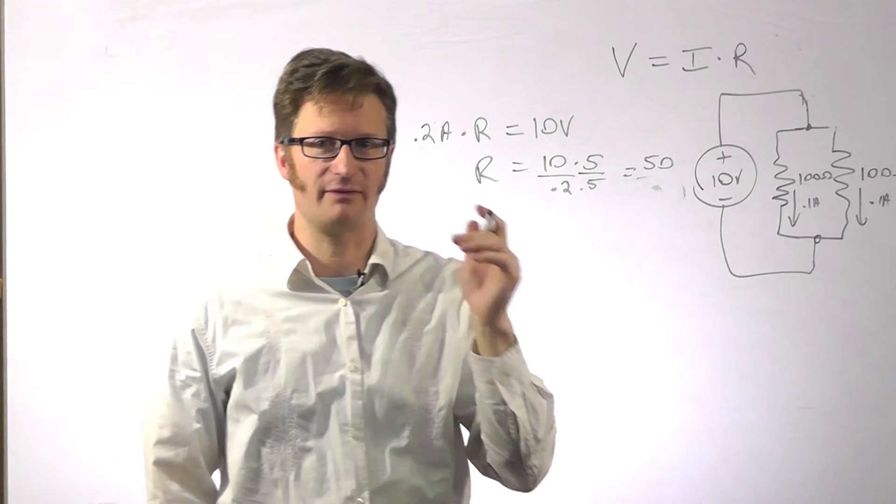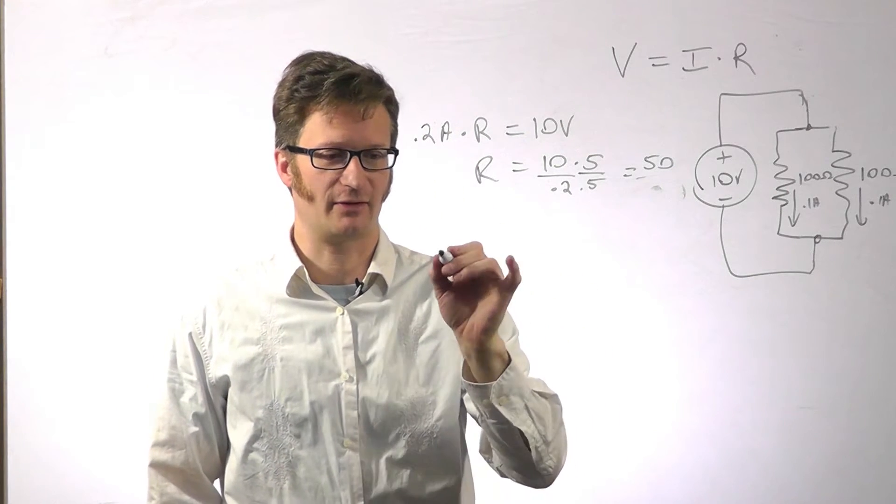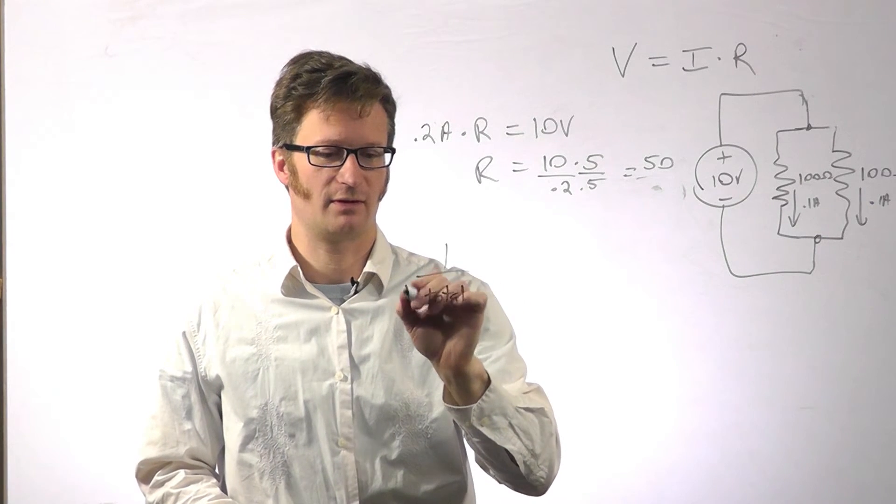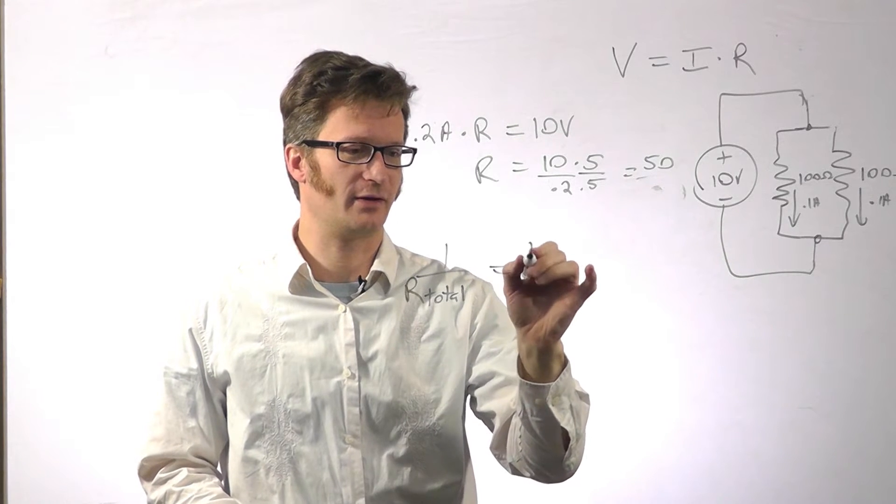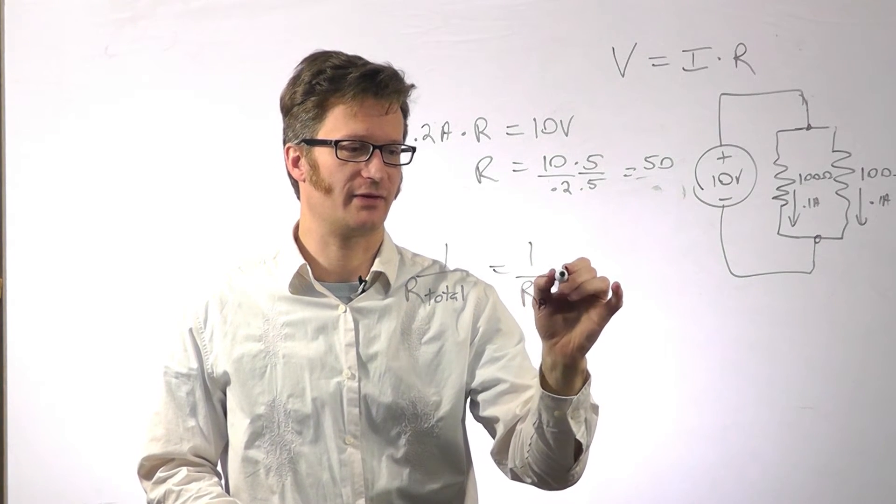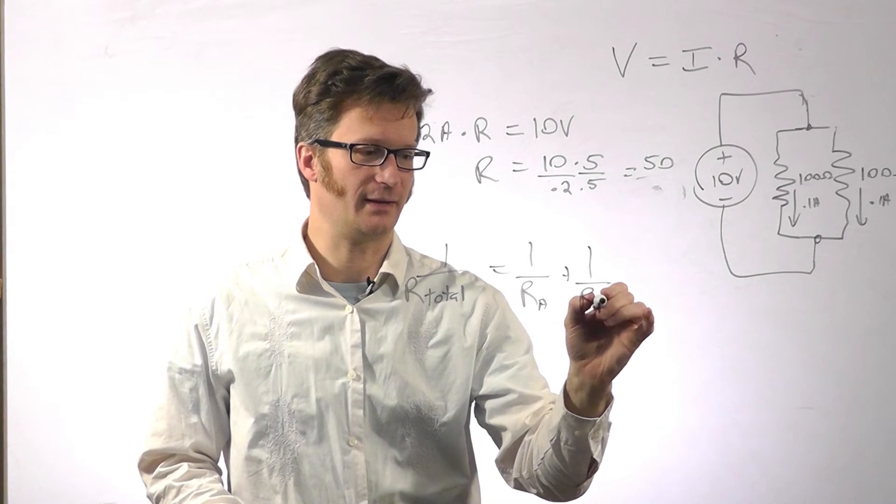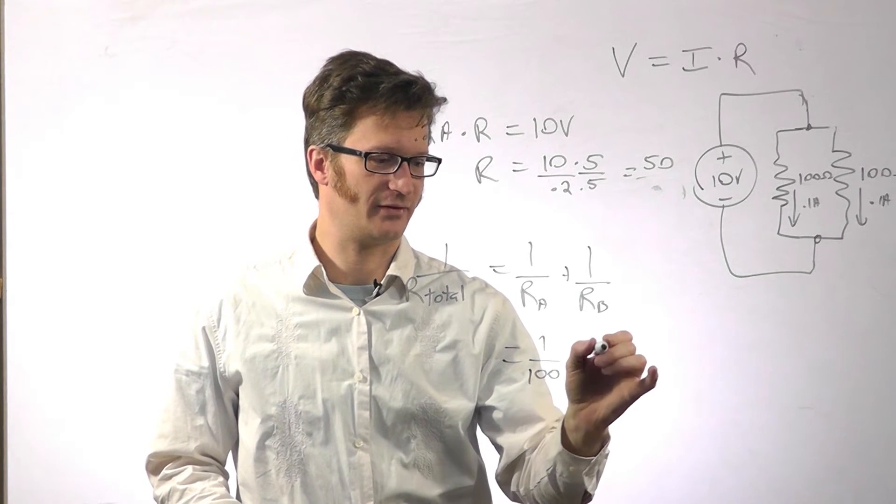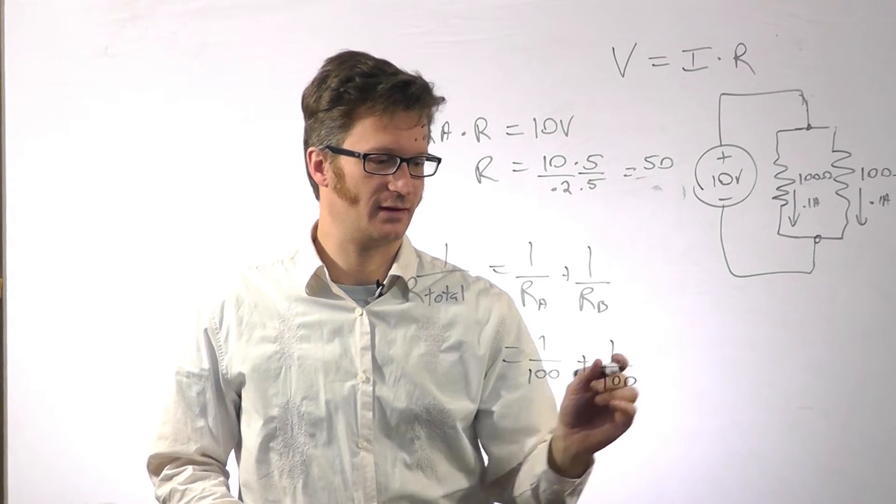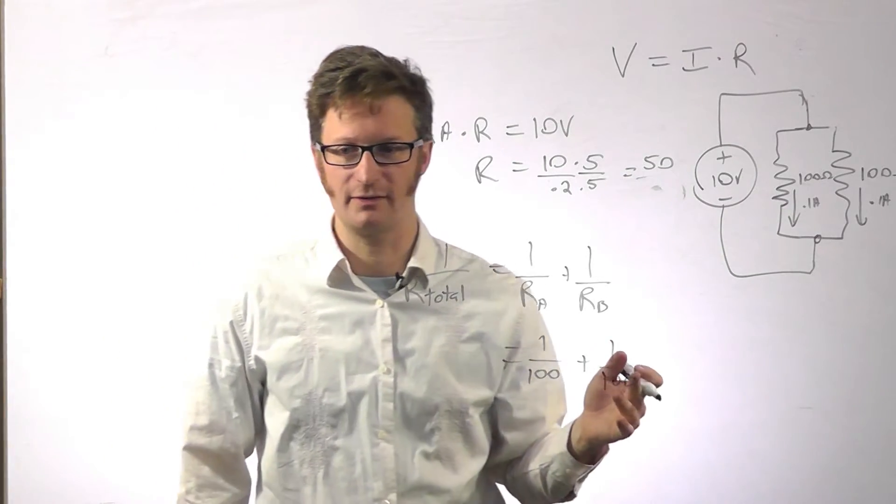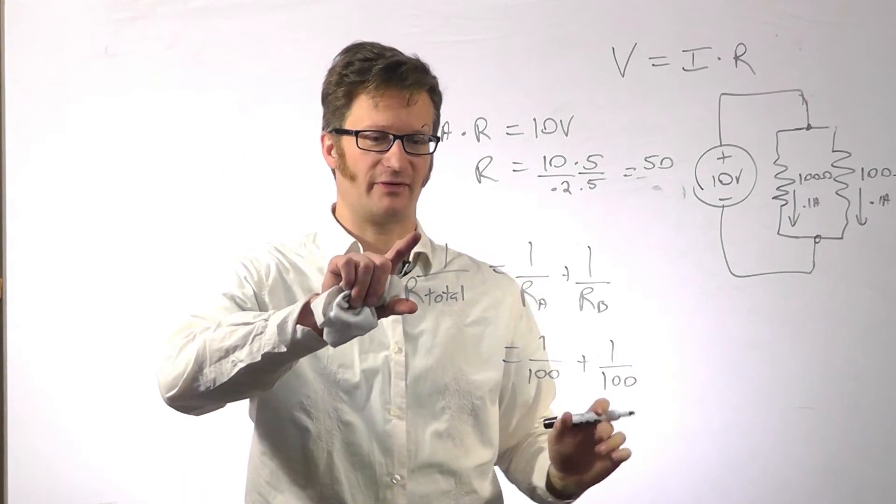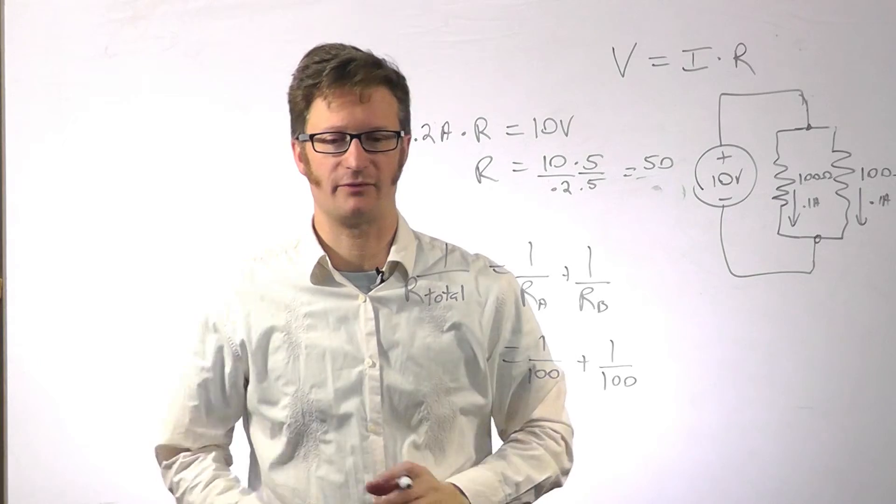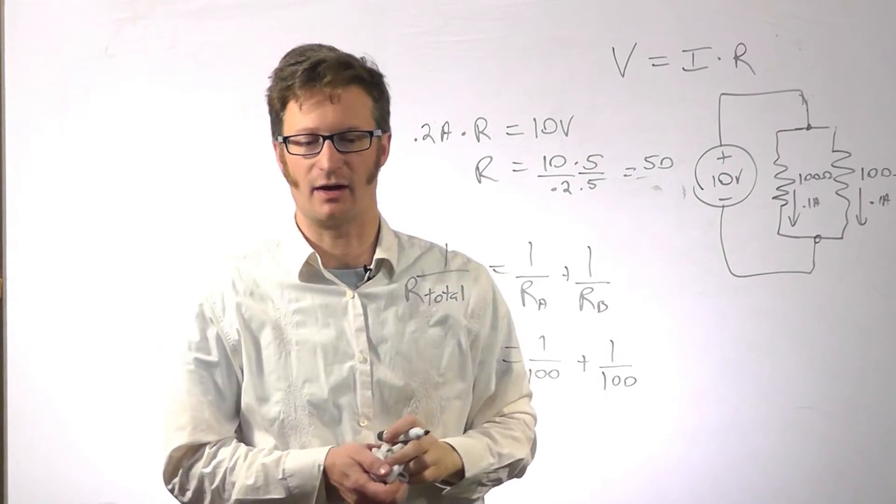And if you recall previously, I talked about parallel resistance. So I said 1 over resistance total equals 1 over RA plus 1 over RB. So that equals 1 over 100 plus 1 over 100. And so 2 over 100 equals 1/50th. But since it's 1 over our total, we flip it over. So our total equals 50 ohms. Same answer we got here.